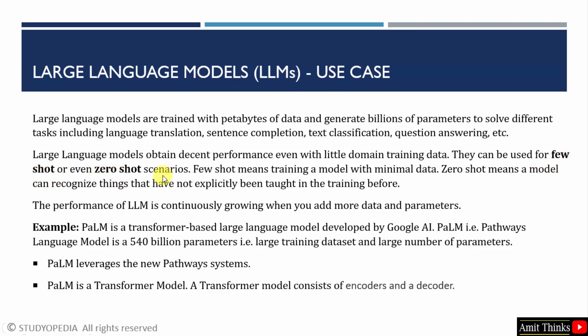What about zero-shot? It means a model can recognize things that have not been taught in training before — zero-shot means nothing was trained on it. The performance of an LLM grows when you add more data and parameters. As we just saw, PaLM has 540 billion parameters.